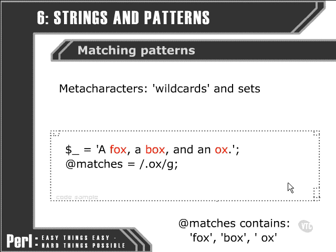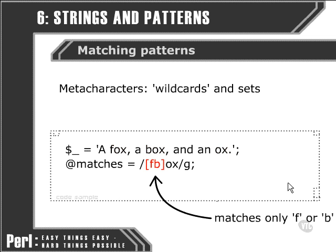We can do this by using a character set. We enclose a character set within square brackets, and it can be as extensive as we like. Here is an example. In this case, we're selecting only F and B within our character set. So Perl is looking for either an F or a B, followed by an O and then an X.